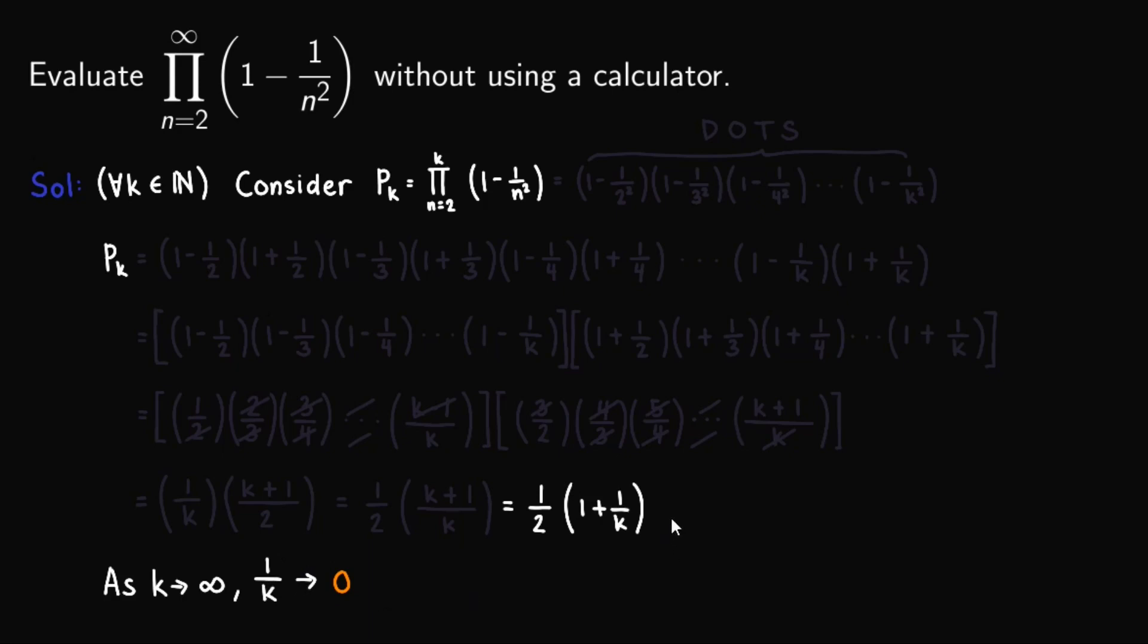Given this, we can now find the value of this one out here as k approaches infinity. And so, 1 half times 1 plus 1 over k, as k approaches infinity, is equal to, so we'll have here, 1 half times 1 plus 0. So technically, 1 over k approaches 0, so we'll have 0 out here. And when simplified, this is just equal to 1 half.